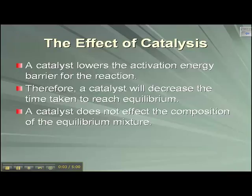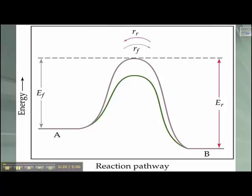The effects of a catalyst: remember, a catalyst lowers the activation energy barrier for the reaction, so it decreases the time that it takes to reach equilibrium. The catalyst does not affect the composition of the equilibrium mixture because it's added in and then used up and doesn't participate in the actual reaction. Here's the energy diagram — the green is the rate of your forward reaction, and the purple is the rate of your reverse reaction as affected by a catalyst. Your rates without the catalyst would be higher.